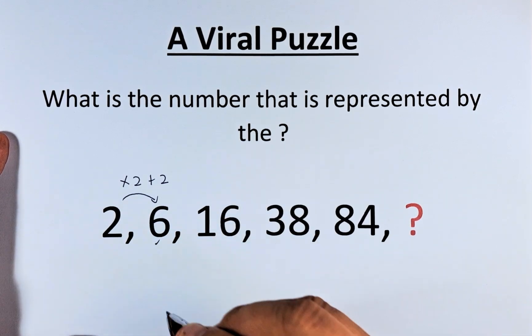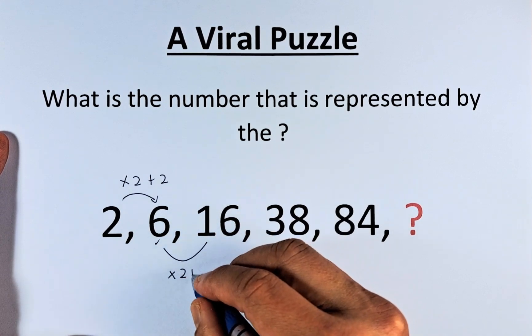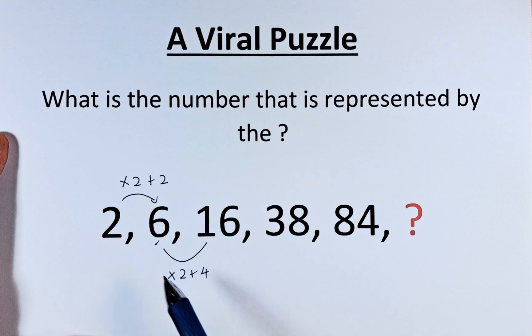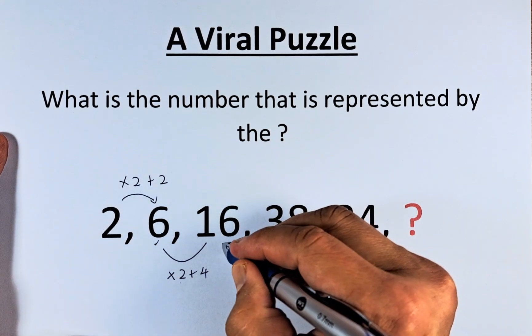Next, to get from 6 to 16, we are going to multiply by 2 and this time add 4. So 6 times 2 is 12, 12 plus 4, that gives us 16.